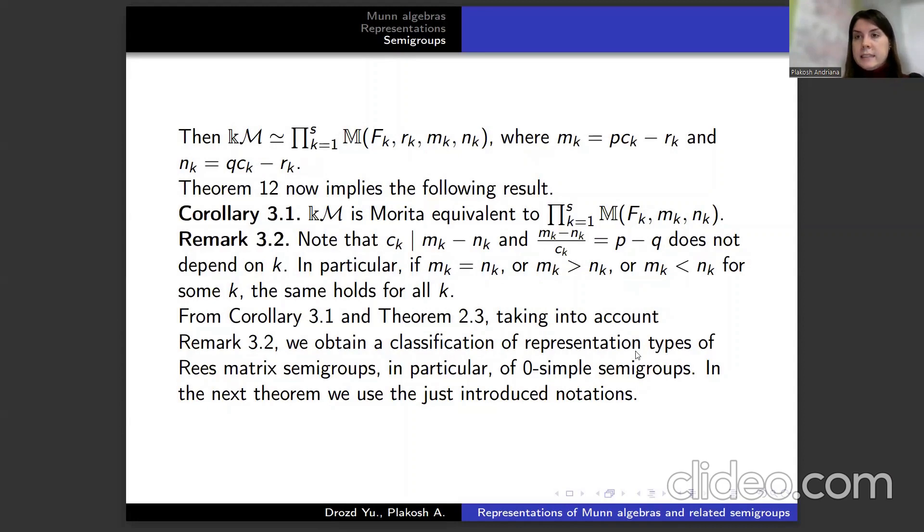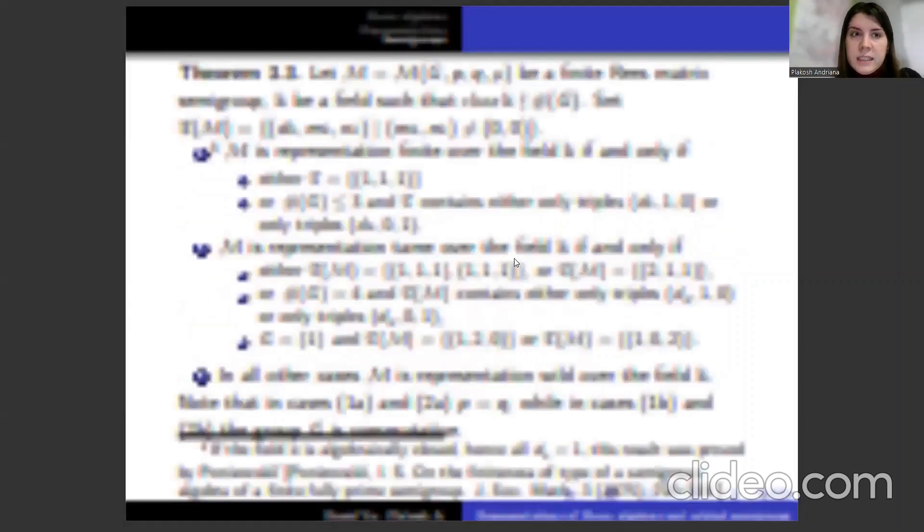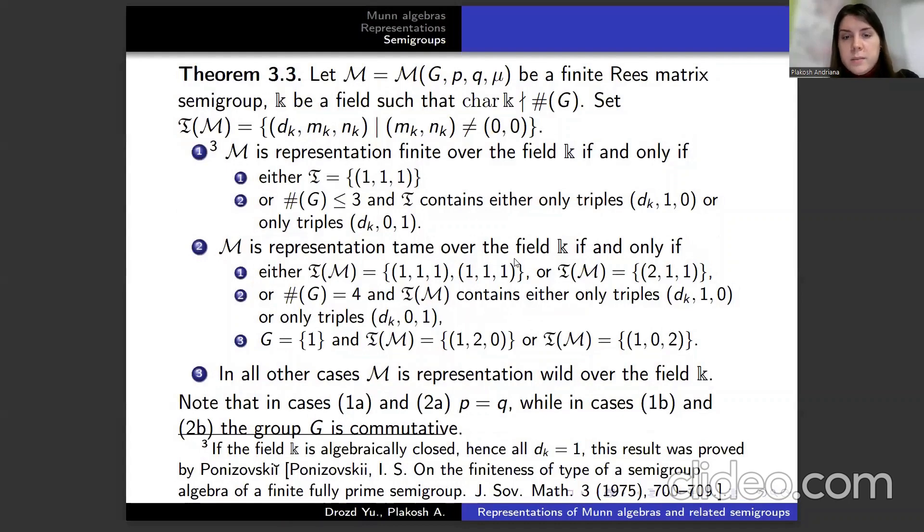We can formulate some corollary and remark, but we have so little time, so I will skip. And I present you a theorem, where we have a finite Rees matrix semigroup, k field such that characteristic of k does not divide order G, and we have set T(M). We have three cases.